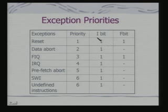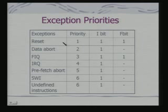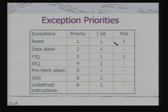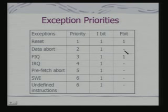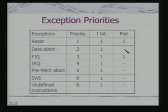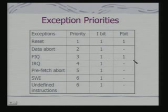Now these exceptions have priorities associated with them. I have listed here the exceptions and their priorities, and you will find the reset exception has got the maximum priority. The two columns indicate the value of the I bit and the F bit — bits in the status register when such an exception occurs. In a reset exception, both the I bit and F bit are set, which means both the FIQ and IRQ interrupt requests are getting disabled. Similarly, when a data abort occurs, the I bit is set to 1, but the F bit is not set — so normal IRQ is disabled but FIQ is not disabled.